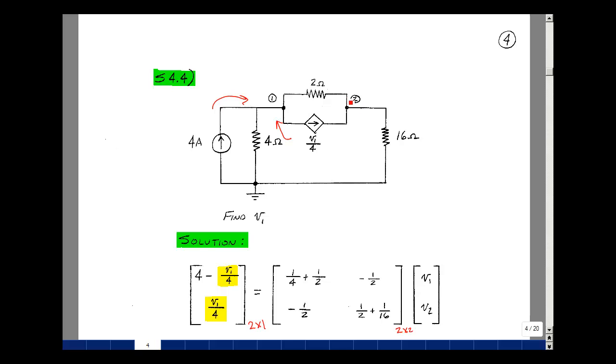Second equation then is at node 2. Sum of the conductances at node 2, that'll be a half plus a 16th. That's going to go in row 2, column 2. What goes in row 2, column 1 is the sum of the conductances between nodes 2 and 1 negated. In this case, it'll just be a minus 1 half. And lastly, what goes on the left-hand side of the equation are the current sources that are entering node 2, and that's just going to be V1 over 4.